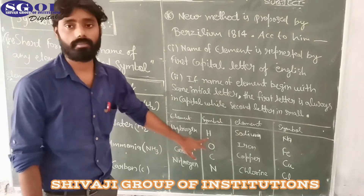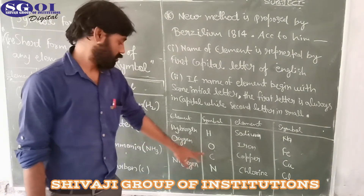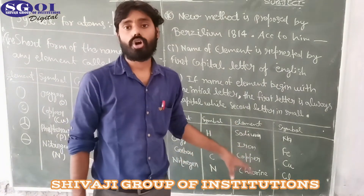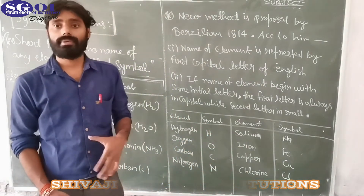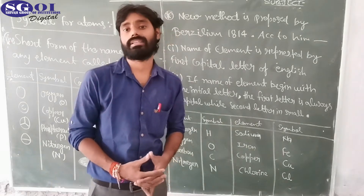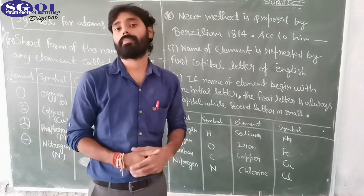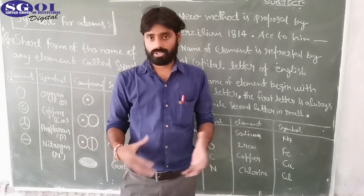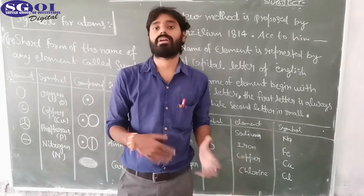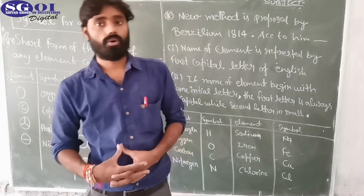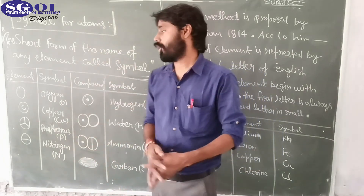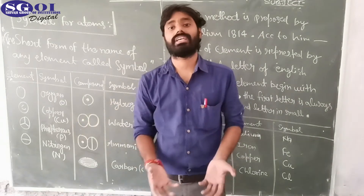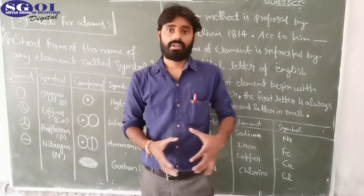The table shows: hydrogen is represented by H, oxygen by O, carbon by C, nitrogen by N, sodium is Na, iron is Fe, copper is Cu, chlorine is Cl. The definition of the symbol: a short form of the name of an element is called its symbol. And a specific symbol also represents a specific amount of that specific element.